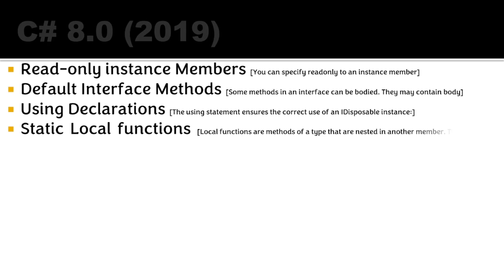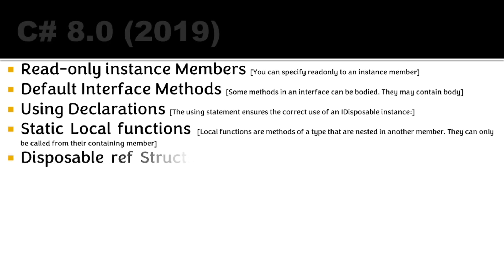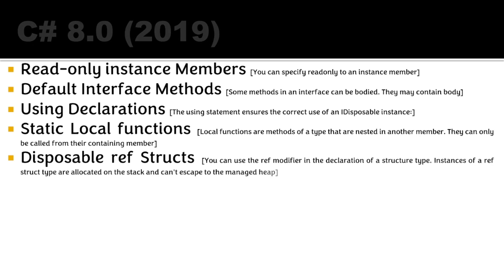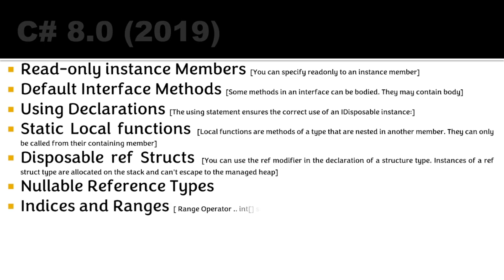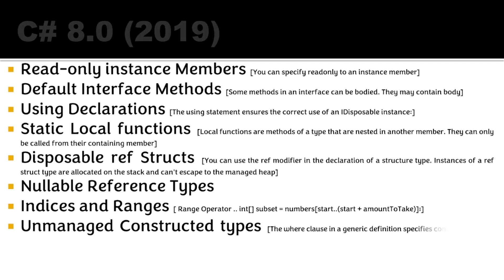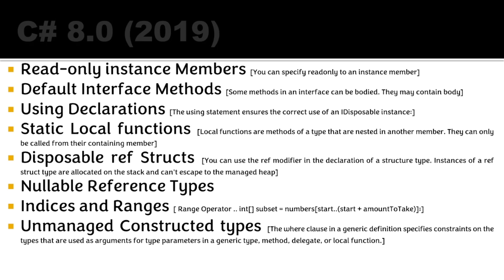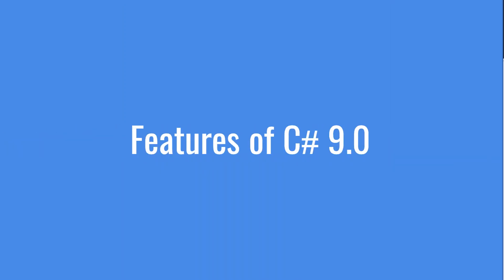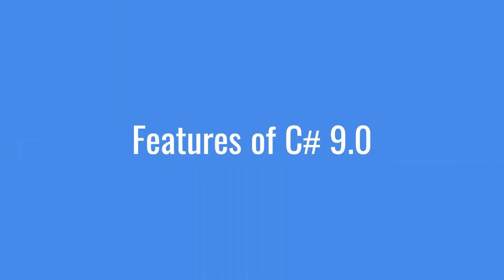Static local functions are methods nested in another member, callable only from their containing member, but declared as static. Disposable ref structs allow you to use a ref modifier in a struct declaration — instances of a ref struct type allocate on the stack and cannot escape to the managed heap. Nullable reference types allow reference types to be nullable. Indices and ranges use the '..' operator. Unmanaged constructed types use the 'where' clause in generic definitions. These covered the major features of C# 8.0.